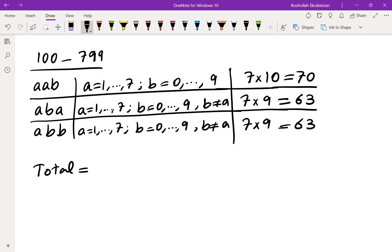So let's add this up. So the total in the range of 100 to 799 is 70 plus 63 plus 63, so that's 70 plus 126 which is 196. So this would have to be larger than the answer.